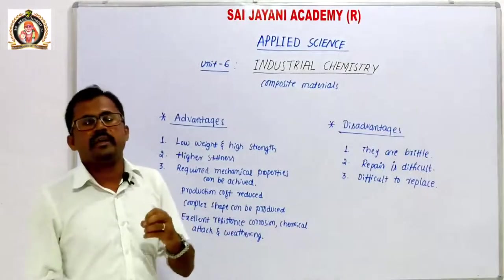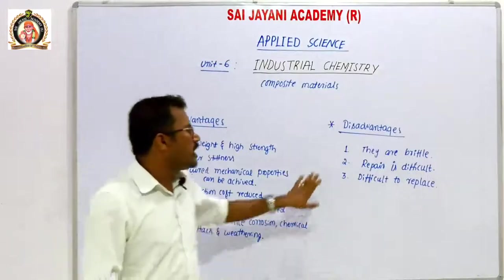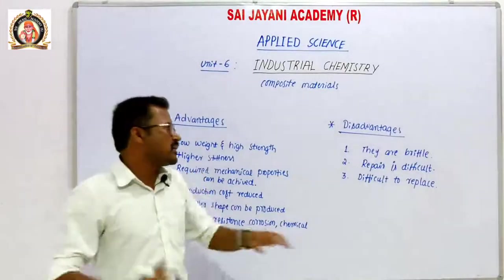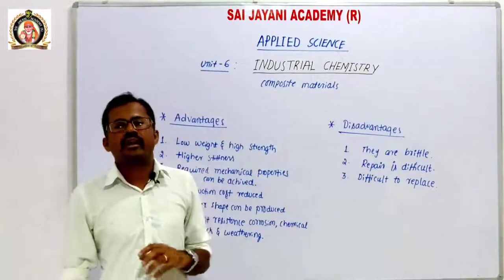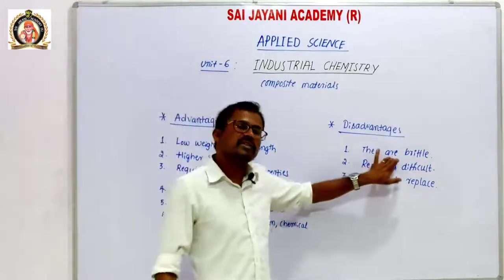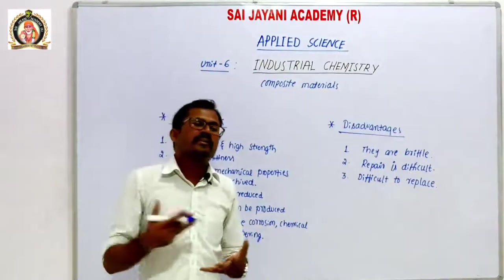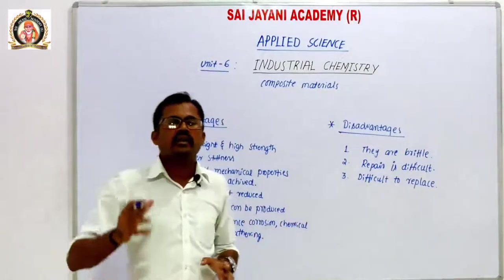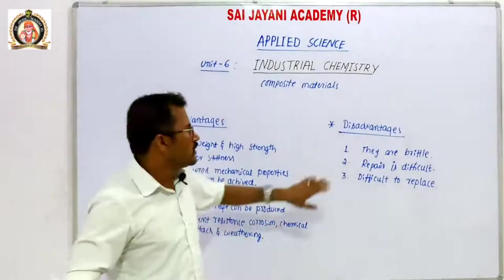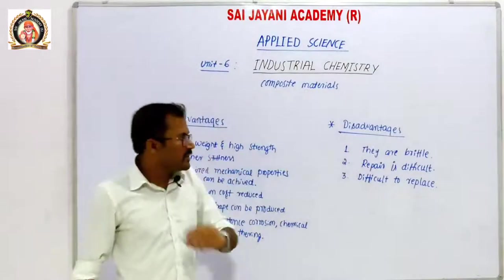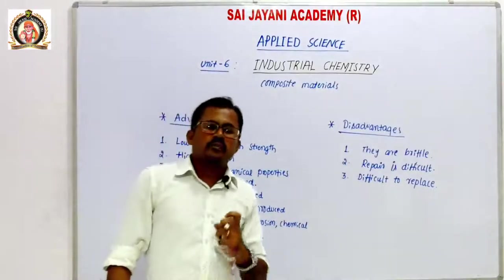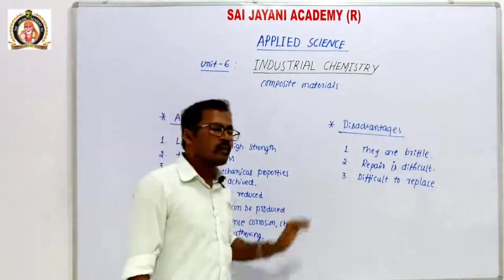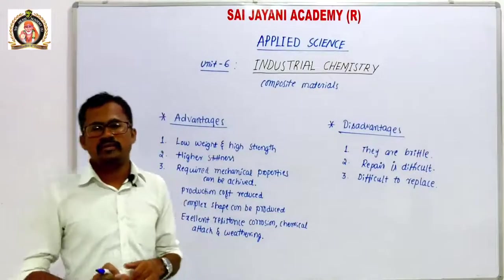Some disadvantages of composite materials are: they are very brittle — without deformation they tend to fail; repair is difficult — in laminate reinforcement composites, if one component fails the entire assembly may need to be replaced; and some manufacturing processes have high expense. These are the main advantages and disadvantages of composite materials.